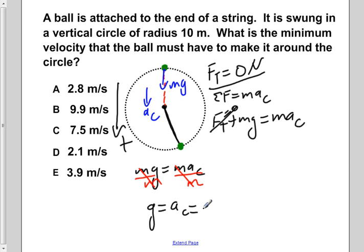We remember that the centripetal acceleration is also given by the equation v squared over r. Now we want to solve for v in this case. If we multiply both sides by r, this would leave us with v squared is equal to g times r.